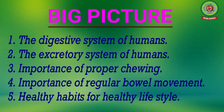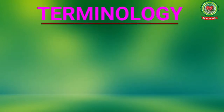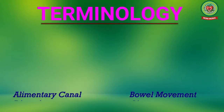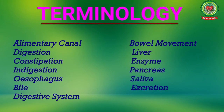In this chapter we will also study about the digestive system of humans, the excretory system of humans, the importance of proper chewing, importance of regular bowel movement, and healthy habits for a healthy lifestyle. The key terms of this chapter are: alimentary canal, digestion, constipation, indigestion, esophagus, bile, digestive system, bowel movement, liver, enzyme, pancreas, saliva, and excretion.